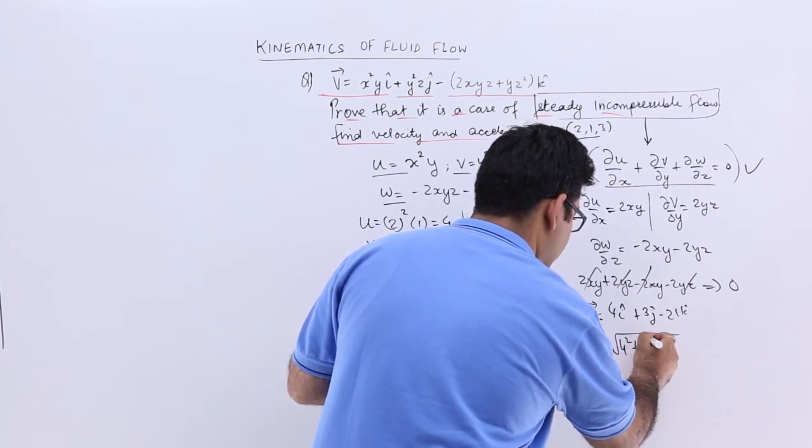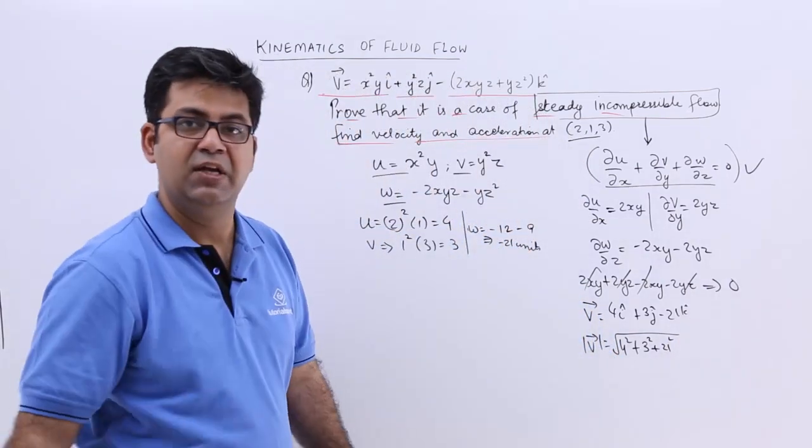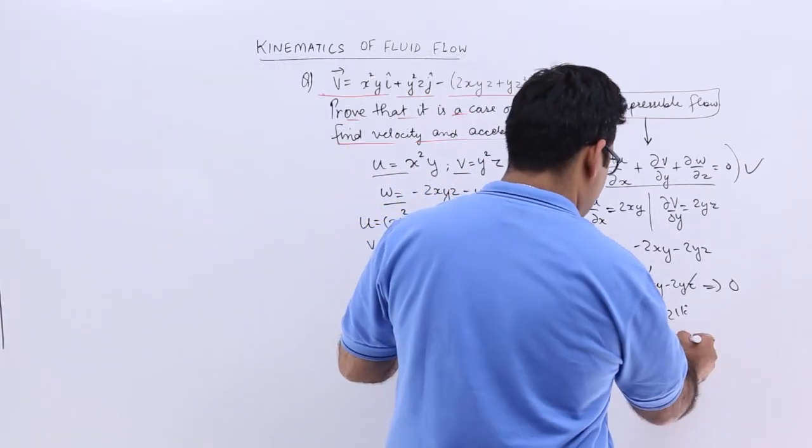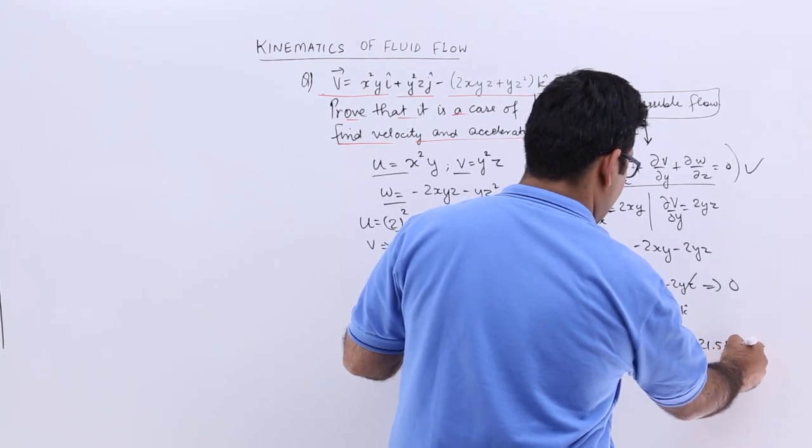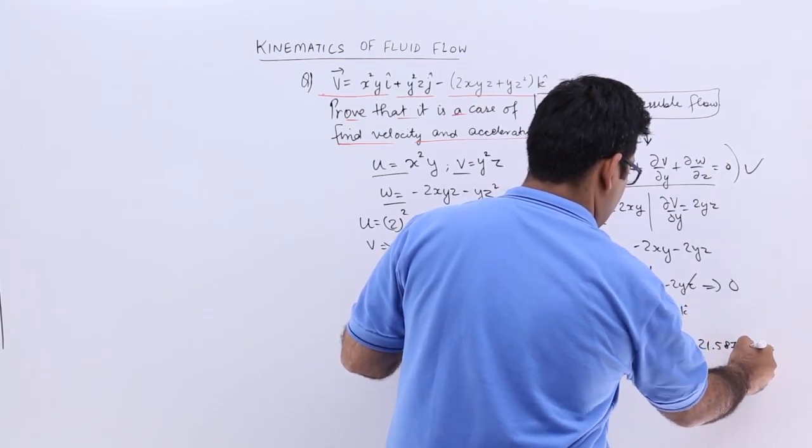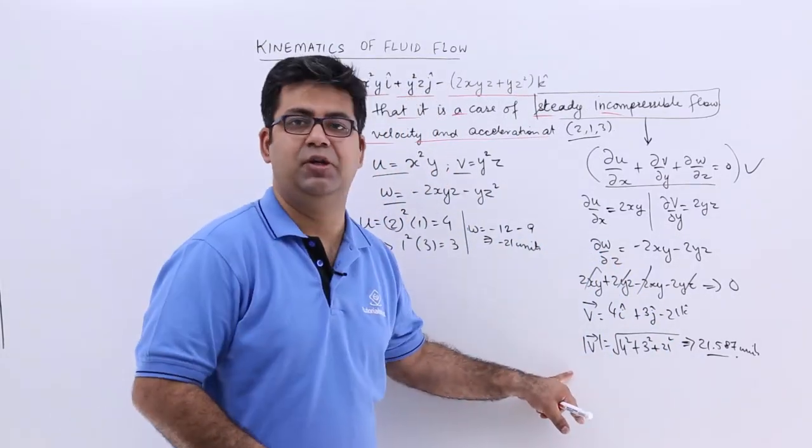So the value would come out to be 21.587 units. So we are done with velocity also.